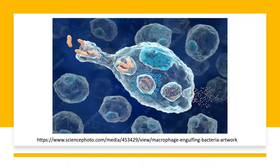Let's take a look at this diagram. You can see the green color, which is the macrophage engulfing the rod-shaped bacteria. This is one example of the immune response that occurs in our body to protect itself from infection.